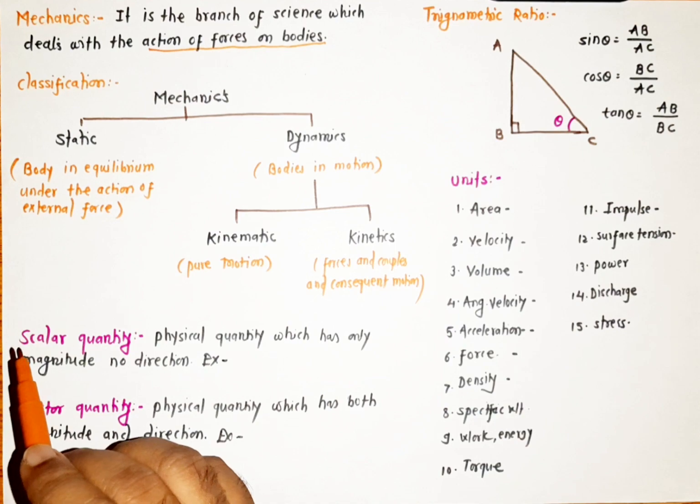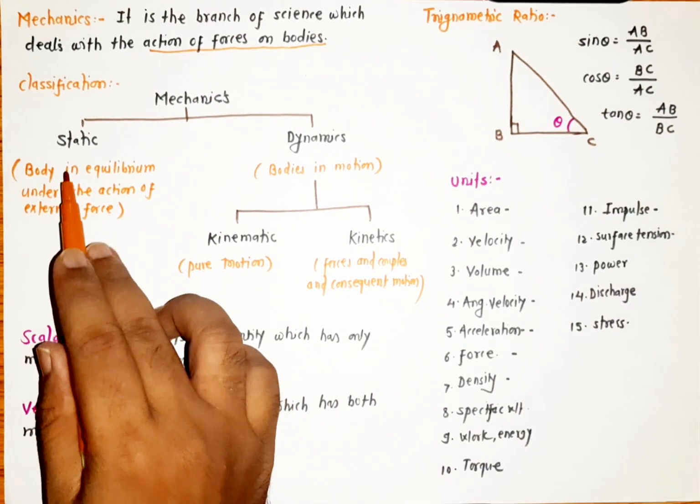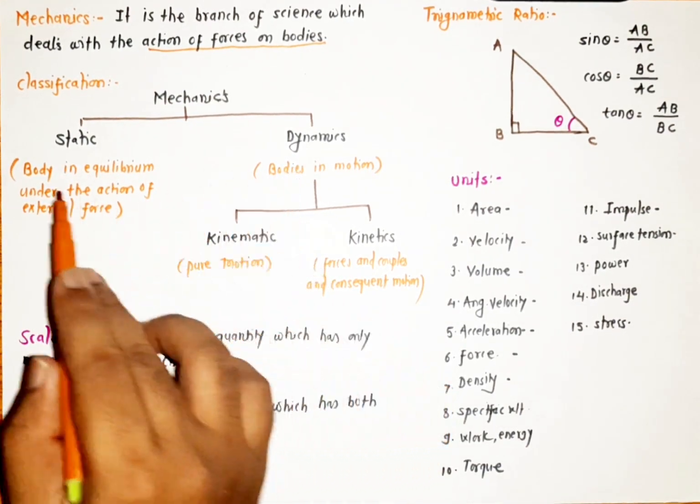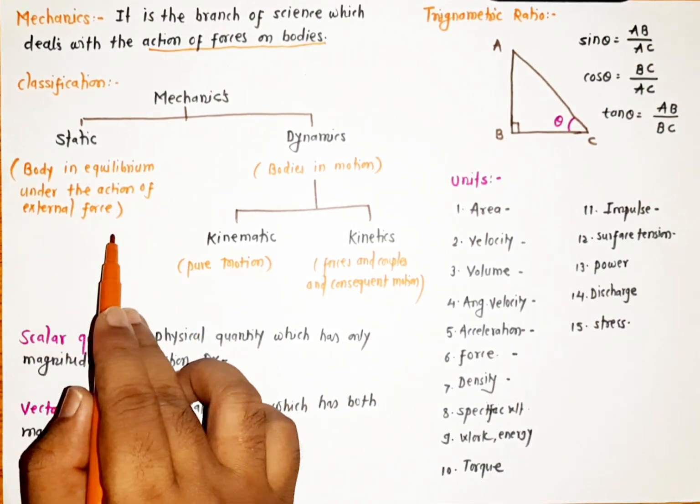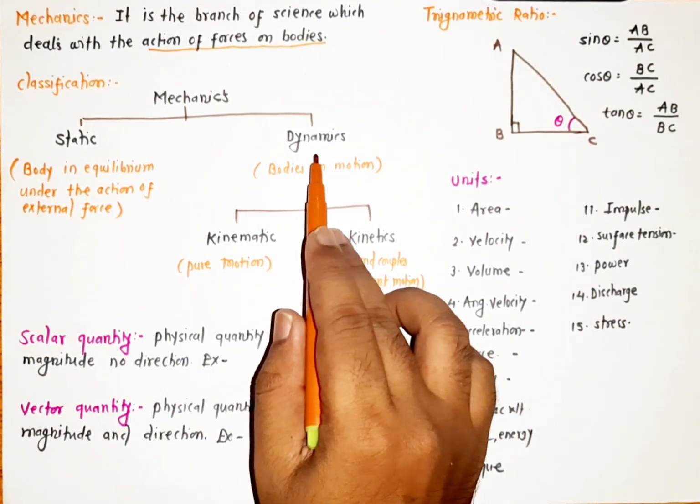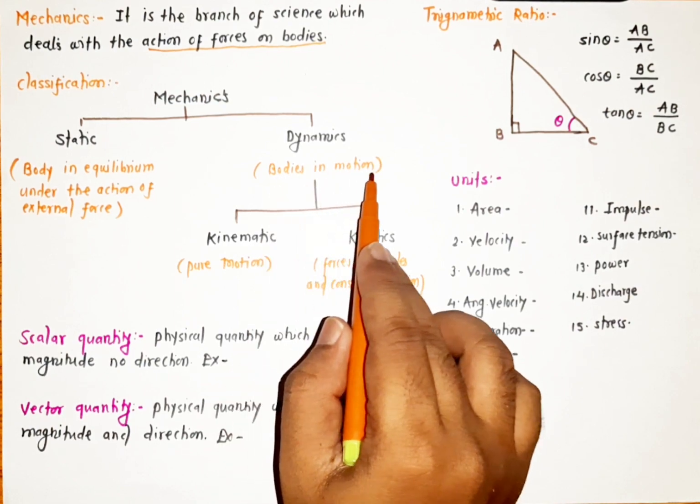There is a classification of mechanics into two terms: one is static and another is dynamic. Static refers to bodies in equilibrium under the action of external forces, and dynamic refers to bodies in motion.